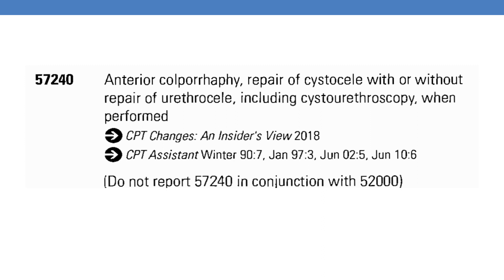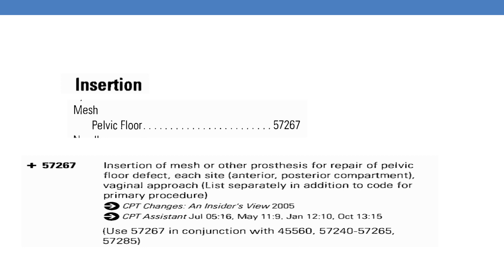Additionally, insertion of mesh is done. If you go to the key term 'insertion' in the index, under it you can find 'mesh,' and under mesh you can find 'pelvic floor' — the CPT is 57267. The description reads: this is an add-on code (+57267), insertion of mesh or other prosthesis for repair of pelvic floor defect, each side, anterior or posterior compartment, vaginal approach.